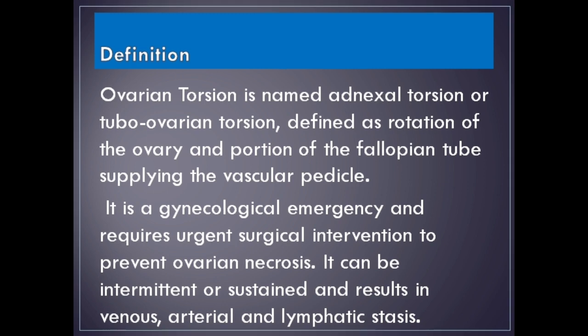Definition. Ovarian torsion, also named adnexal torsion or tubo-ovarian torsion, is defined as rotation of the ovarian pedicle along with the fallopian tube supplying the vascular pedicle. It is a gynecological emergency and requires urgent surgical intervention to prevent ovarian necrosis. It can be intermittent or sustained and results in venous, arterial, and lymphatic stasis.